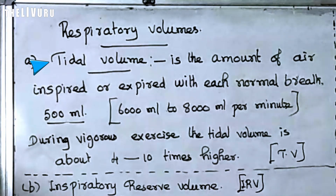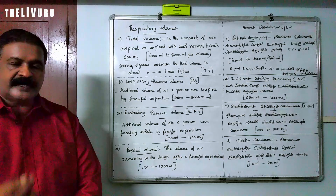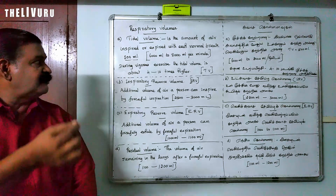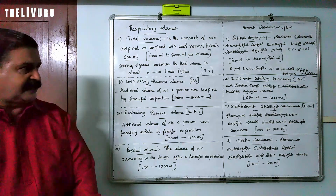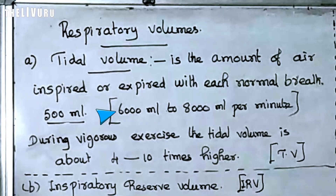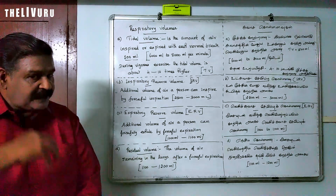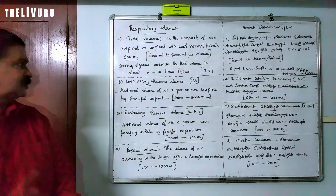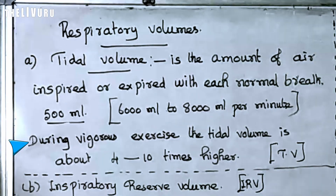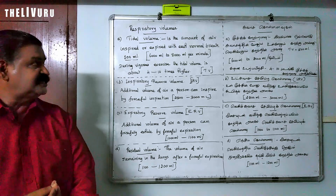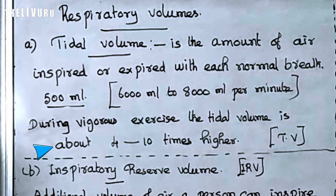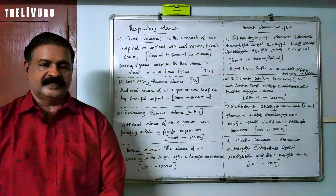Tidal volume is equal to 500 mL, which is equal to 6000 mL to 8000 mL per minute. During vigorous exercise, the tidal volume is about 4 to 10 times higher.